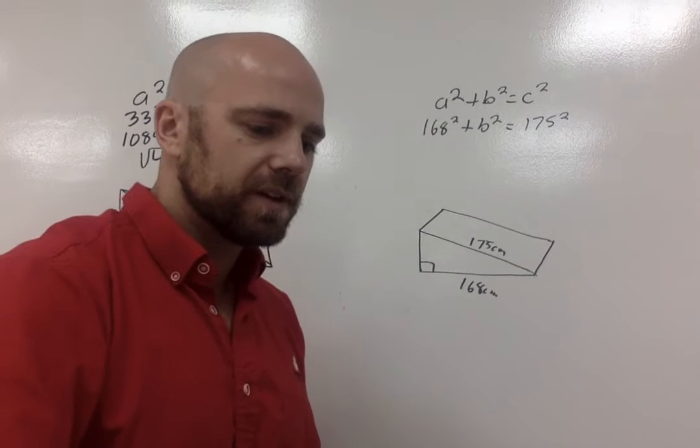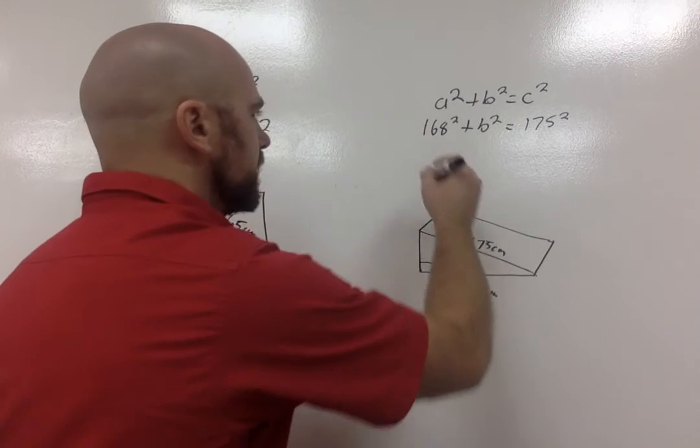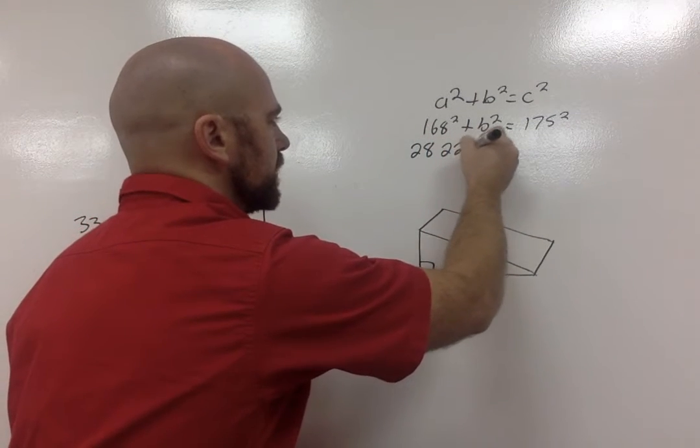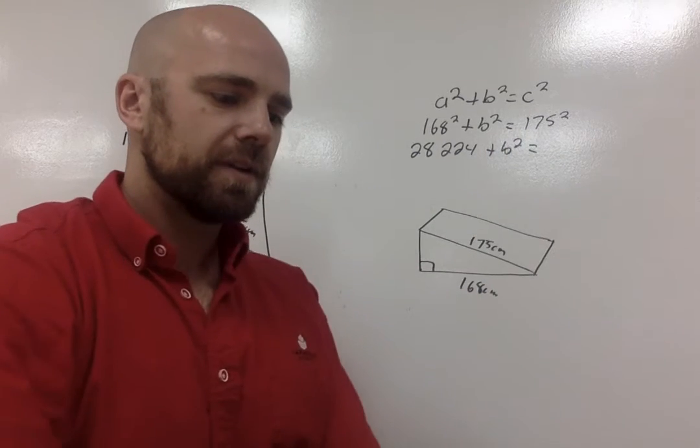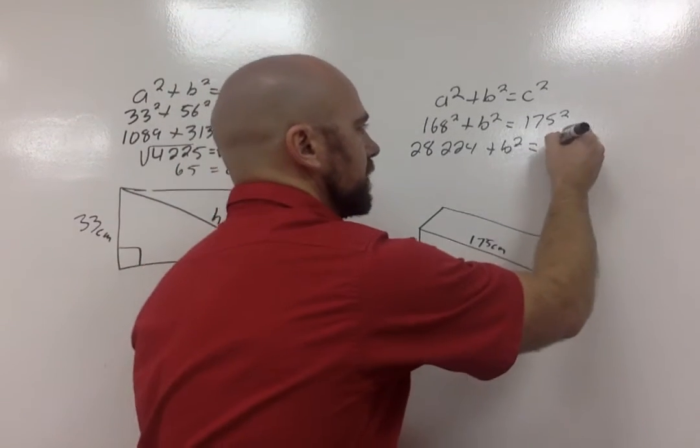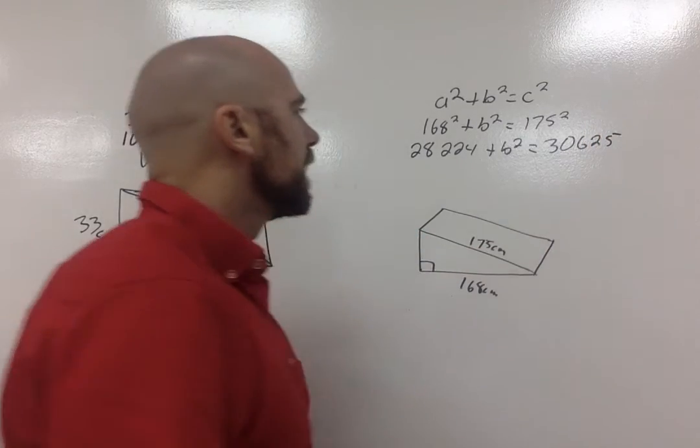So I'm going to square everything. So 168 times 168 gives me a big number, 28,224 plus B squared equals, and then when I say 175 times 175, it gives me another big number. So 30,625.